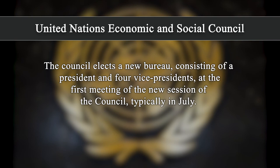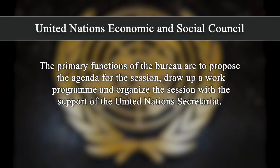The council elects a new bureau consisting of a president and four vice presidents at the first meeting of every new session, typically in the month of July. The primary functions of the bureau are to propose the agenda for the session, draw up a work program, and organize the session with the support of the United Nations Secretariat.